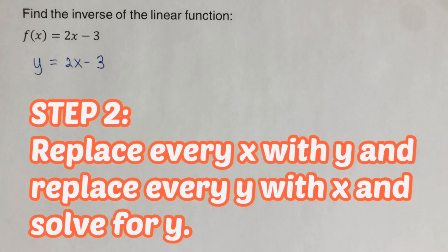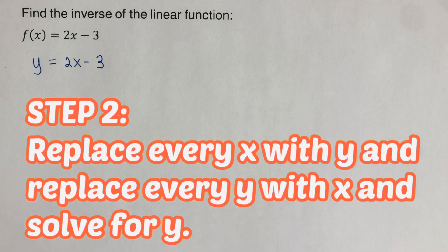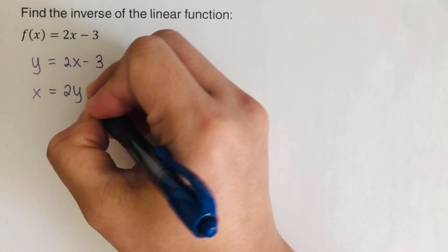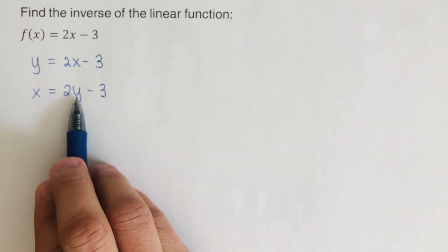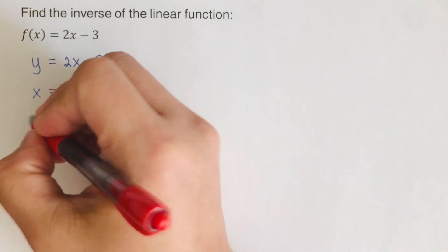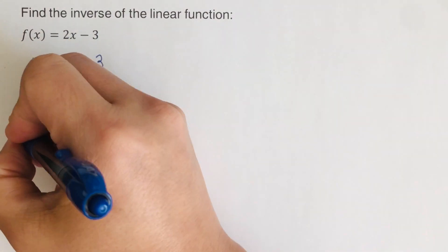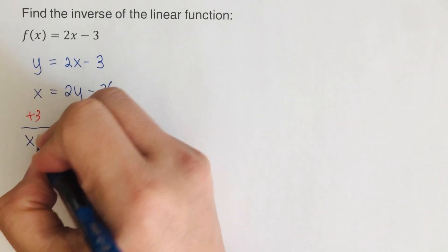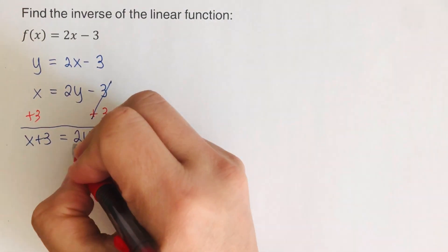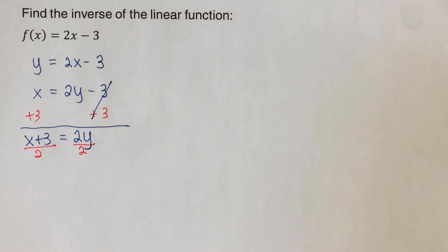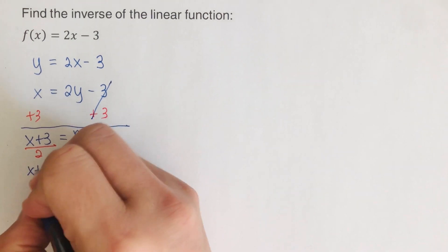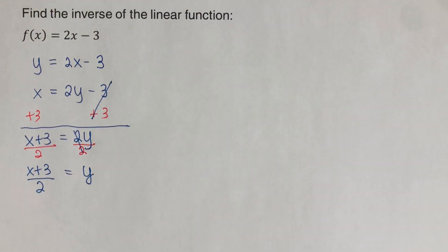Step two: replace every x with y and every y with x, then solve for y. This y becomes x and this x becomes y, giving us x = 2y - 3. We add 3 to both sides: x + 3 = 2y. Dividing both sides by 2 gives y = (x + 3) / 2.